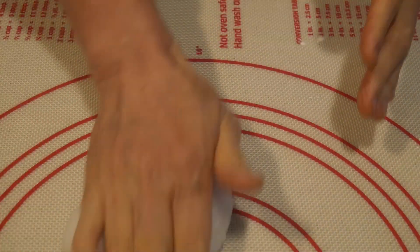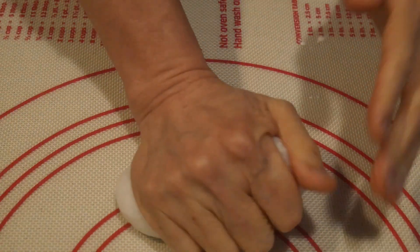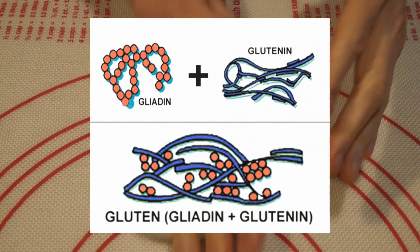When you knead the flour, the physical force causes the glutens to form a cross-linked structure. In this case, it is the gluten that provides the shape of the flour dough.